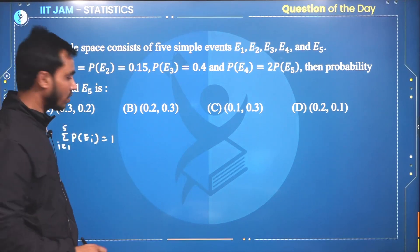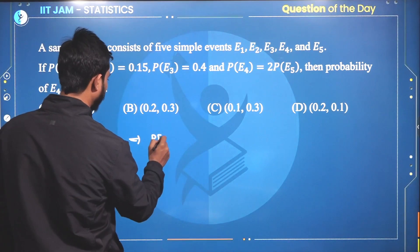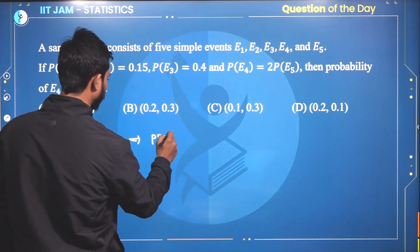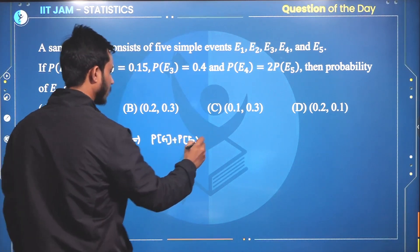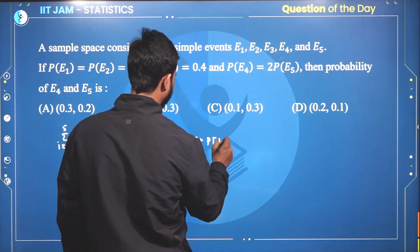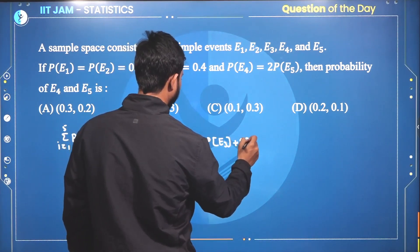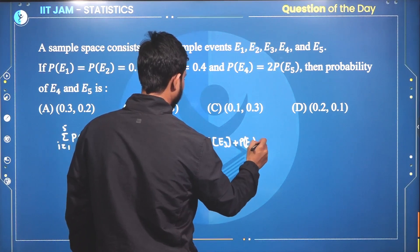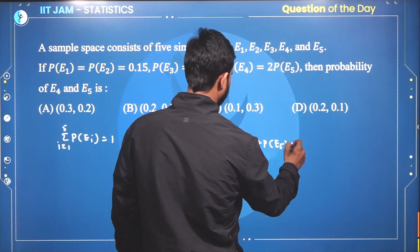Let us simplify the equation. Probability of E1 plus probability of E2 plus probability of E3 plus probability of E4 plus probability of E5 equals 1.